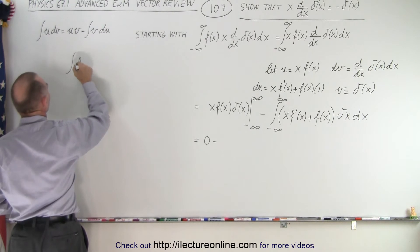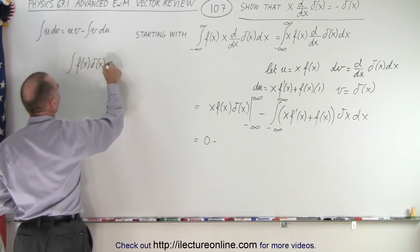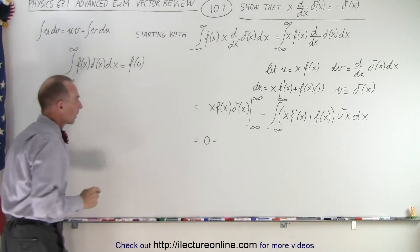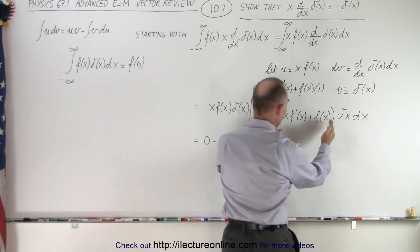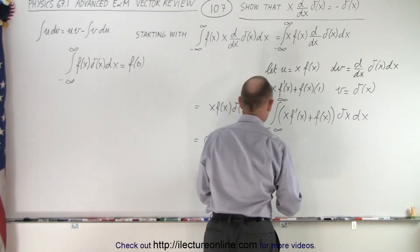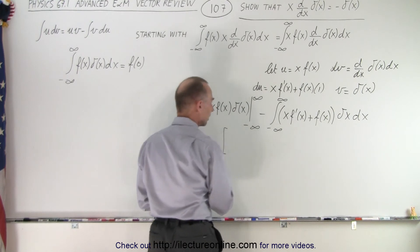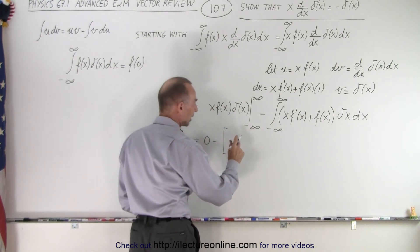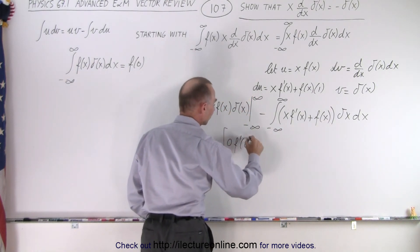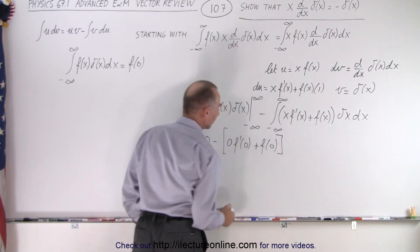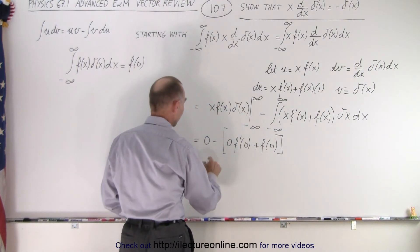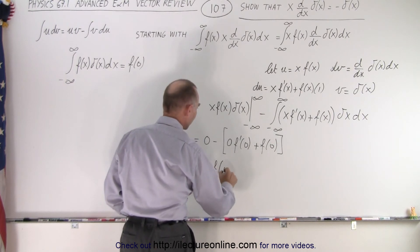Remember the rule: the integral of f of x times delta of x dx, evaluated from minus infinity to infinity, is simply equal to the function evaluated at zero. Here we have some function times delta of x dx, so we evaluate the function at zero. This becomes zero minus the function evaluated at zero: zero times f prime of zero plus f of zero, and since zero times f prime of zero is simply zero, this becomes negative f of zero.